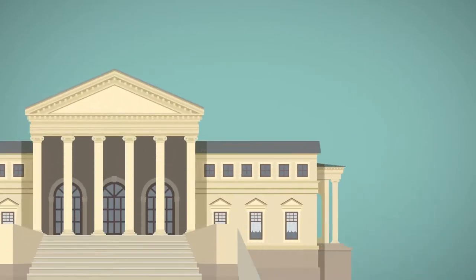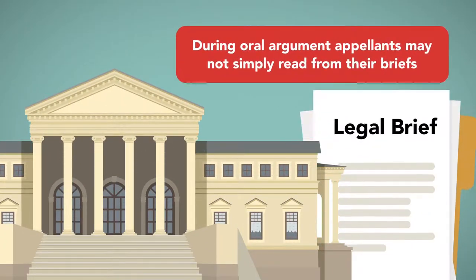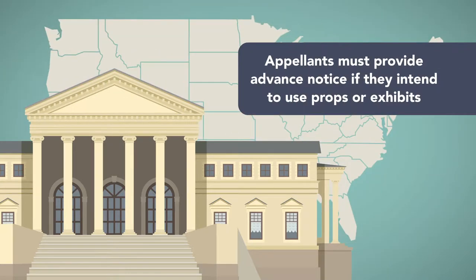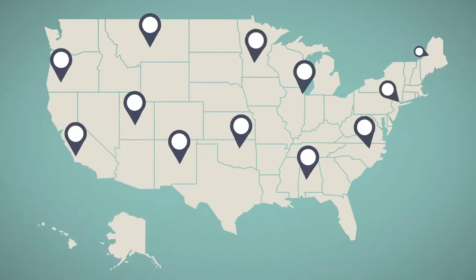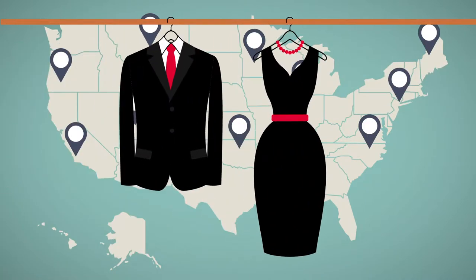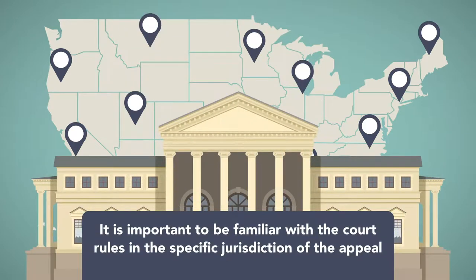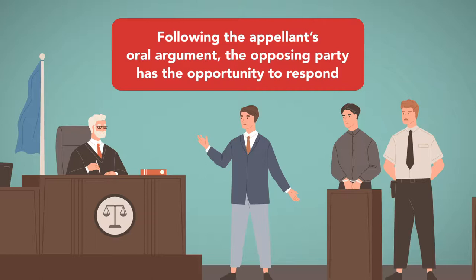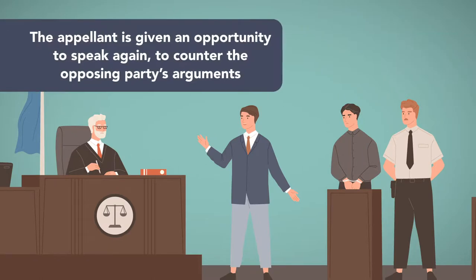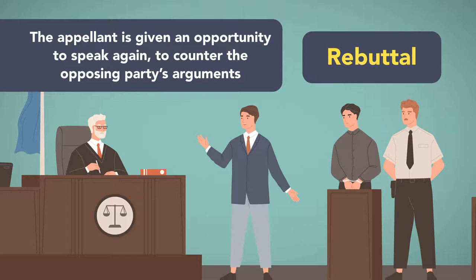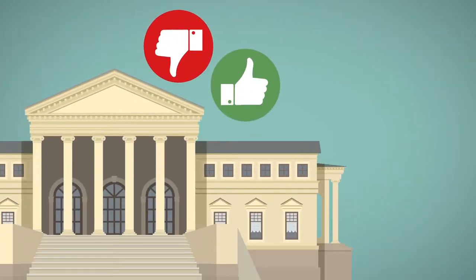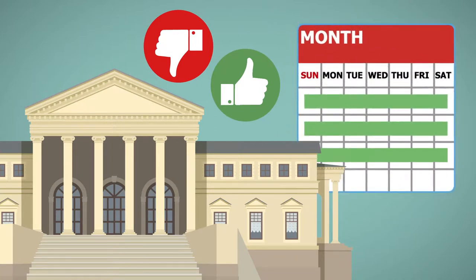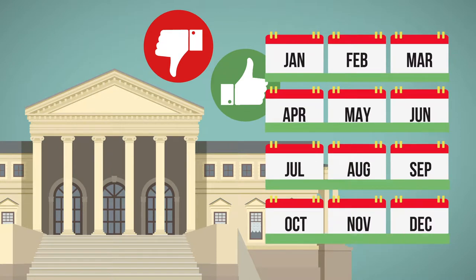There is no absolute right to oral argument, and an appellate court may deny a request if the court believes it can render a proper decision based solely on the contents of the legal briefs. If oral argument is granted, there are additional rules governing what it may include, and these rules also vary. For example, in federal court, appellants may not simply read from their briefs. In some jurisdictions appellants must provide advance notice if they intend to use props or exhibits, and some jurisdictions even have rules requiring certain court attire. Following the appellant's oral argument, the opposing party has the opportunity to respond. Sometimes the appellant is given an opportunity to speak again to counter the opposing party's arguments, known as rebuttal. Once oral arguments conclude, the appellate court will render a decision, usually within weeks or months, though in rare cases it may be closer to a year.